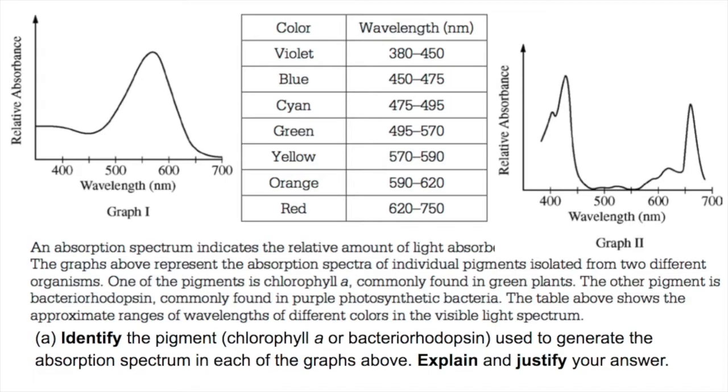Part A. Identify the pigment, chlorophyll A or bacteriorhodopsin, used to generate the absorption spectrum in each of the graphs above. Explain and justify your answer.